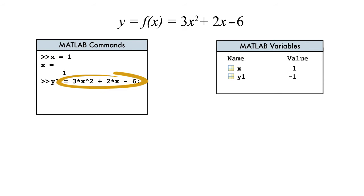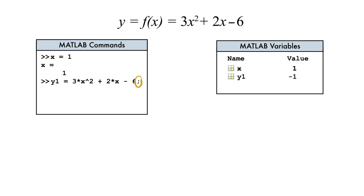The expression to the right of the assignment operator is evaluated using the current value of x. Then the result is assigned to the variable. Notice that y1 is in memory, but the result was not displayed. That's because we ended the statement with a semicolon, which prevents output from being shown.